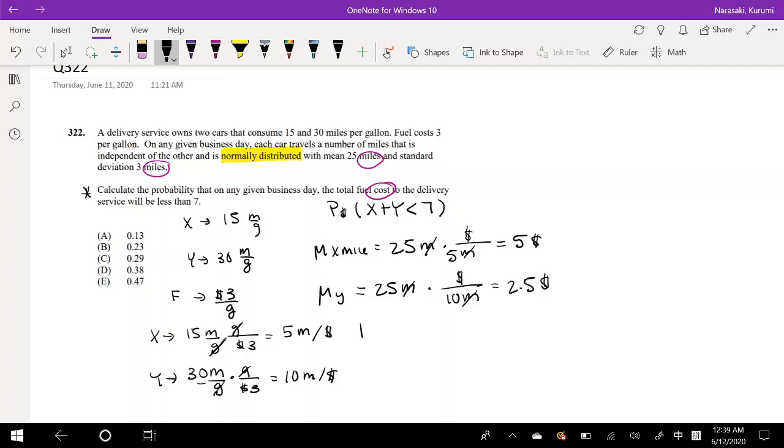But what we're trying to find is the mean of x plus y, the mean of total cost. So we have to add those two together, and we're going to get 5 plus 2.5, which is 7. So that's our mean.